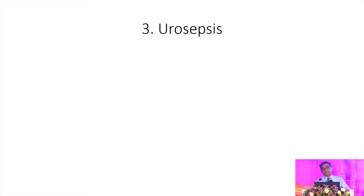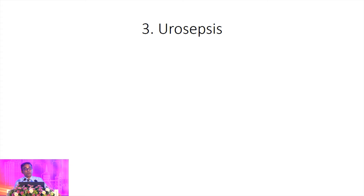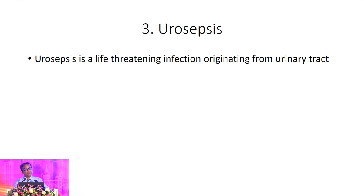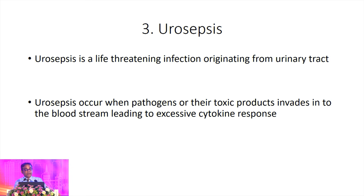Let us move to the next difficult-to-treat urological infection: urosepsis. We all know urosepsis is a life-threatening infection originating from the urinary tract. The pathology is due to invasion of organisms from the urinary tract into the bloodstream, or spilling of the toxic effects of microorganisms into the general circulation. Urosepsis is associated with a cytokine storm, and patients go into shock.